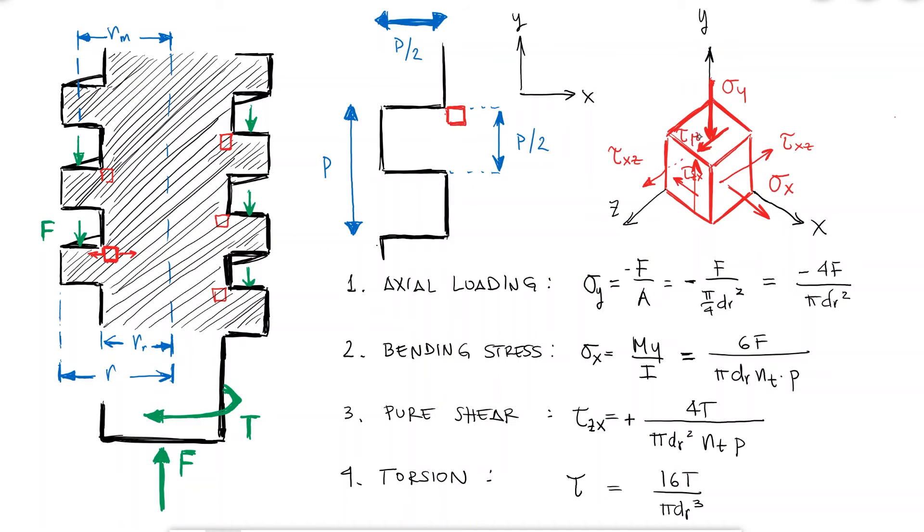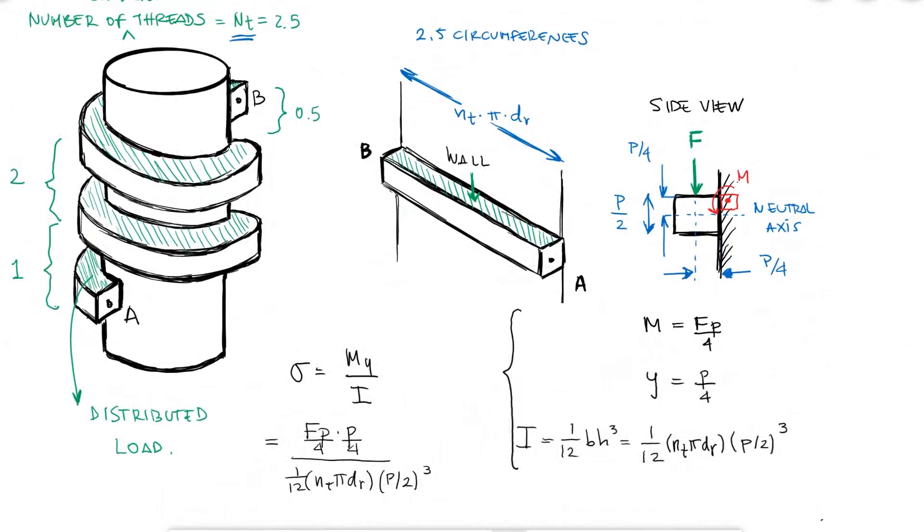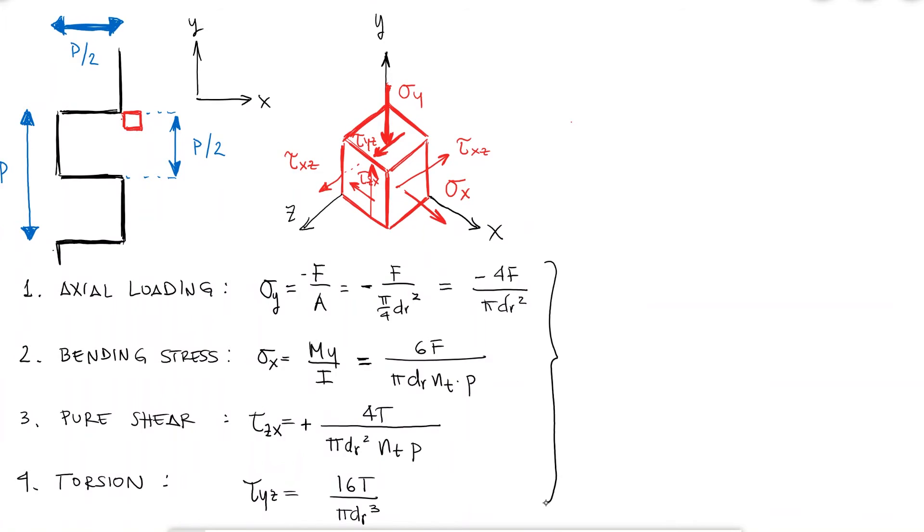The equations that we found here are assuming that all engaged threads are sharing the load equally. In practice, and because the screw is under compression and therefore its length and pitch is shortened, and the nut is under tension and therefore its length and pitch is stretched, the first engaged thread carries approximately 38% of the load, the second thread 25%, the third 18%, and the seventh thread is free of load.